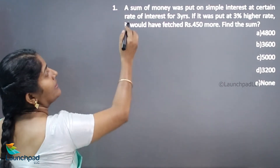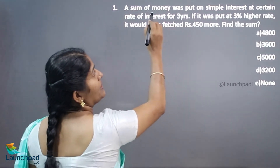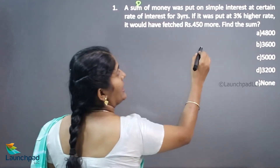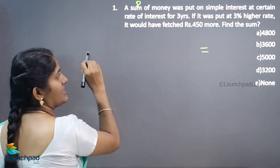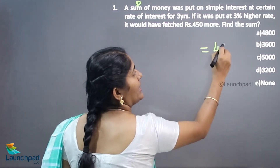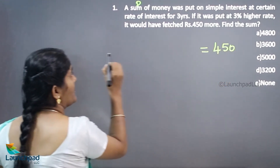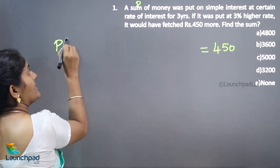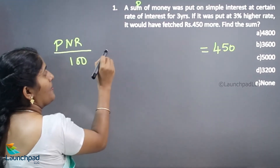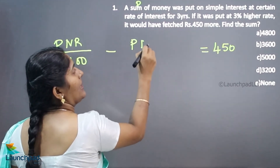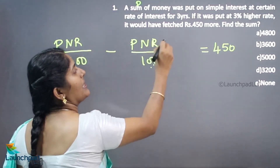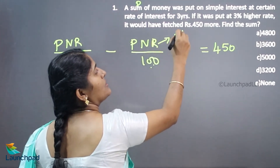Here we don't know the principal amount or the rate of interest. Anyway, the difference between the first SI and the second SI will be 450. I can equate this to 450 rupees. The way to calculate SI is: PNR divided by 100 minus PNR divided by 100 — this time the rate of interest will be increased by three percentage.